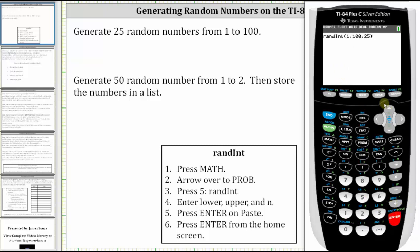And now from the home screen, press ENTER one more time. And now we have a list of 25 random numbers from 1 to 100.